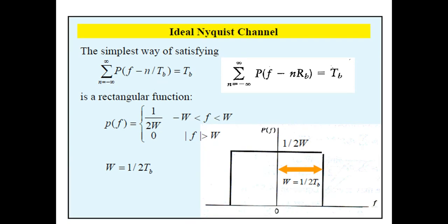Dear students, in the continuation of our previous lecture based on inter-symbol interference, I am your teacher Asif Seth Khan. In the last lecture, we discussed the Nyquist criteria for distortion-less baseband transmission in the absence of noise. We found equations in terms of TB or RB, defining that the function PF eliminates inter-symbol interference if the symbol is taken at interval TB satisfying these conditions. PF refers to the overall system, including the transmit filter, channel, and receive filter.